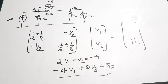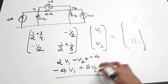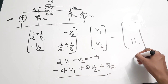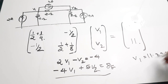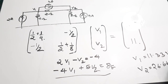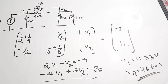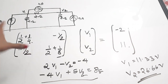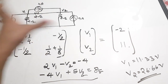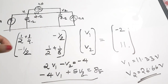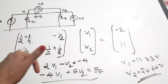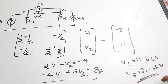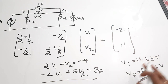Solving these two equations, you get v1 = 11.33 volts and v2 = 26.66 volts. If you have doubt about this matrix method, you can directly apply standard nodal analysis — marking current directions in all branches, writing each equation — and you will still get the same values: v1 = 11.33 and v2 = 26.66.